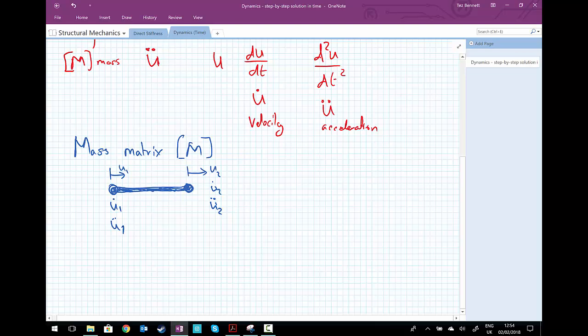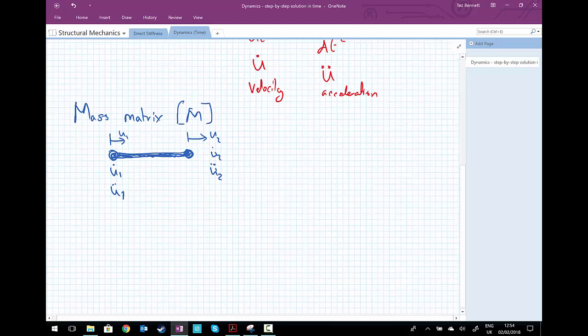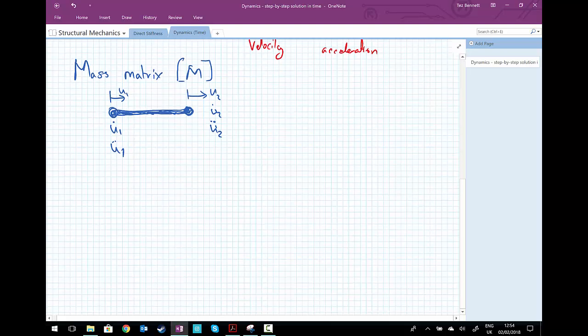We will have two displacements, two velocities, or two accelerations. Our mass matrix for this case will be, for one element only, equals ρ, the mass density, multiplied by the volume. The volume of the element is the cross-sectional area A and the length of the element L. That's the total volume. Multiply by ρ gives us the total mass of the element, and then we wish to distribute the mass between the two nodes.